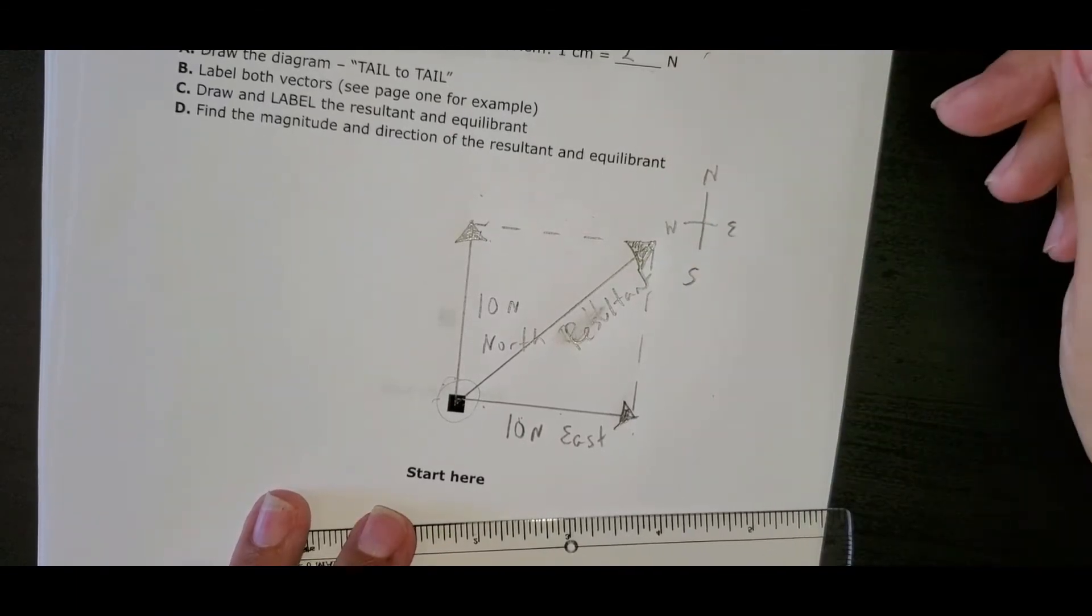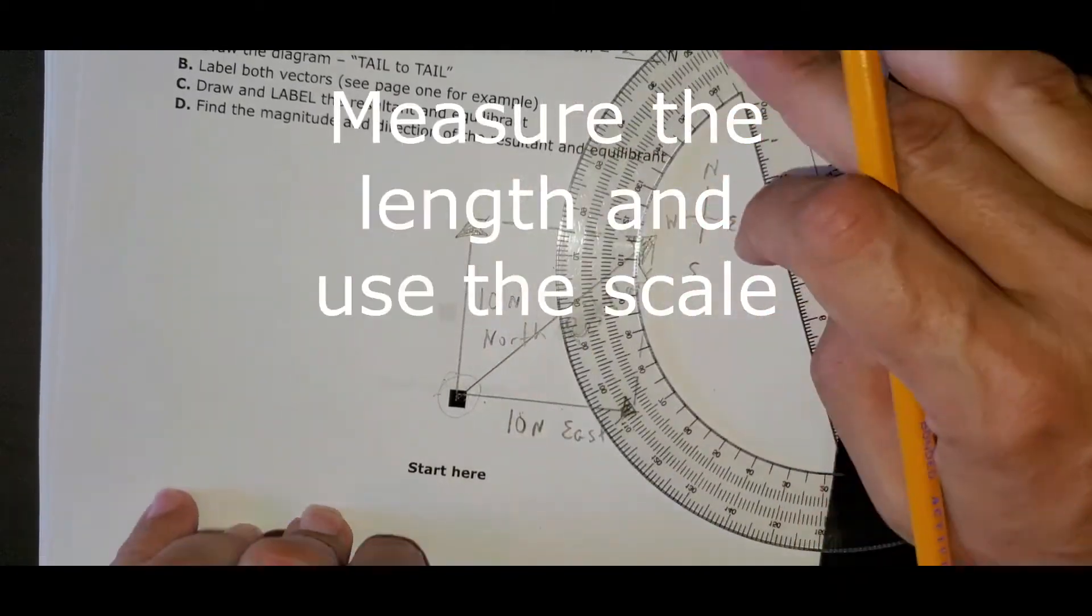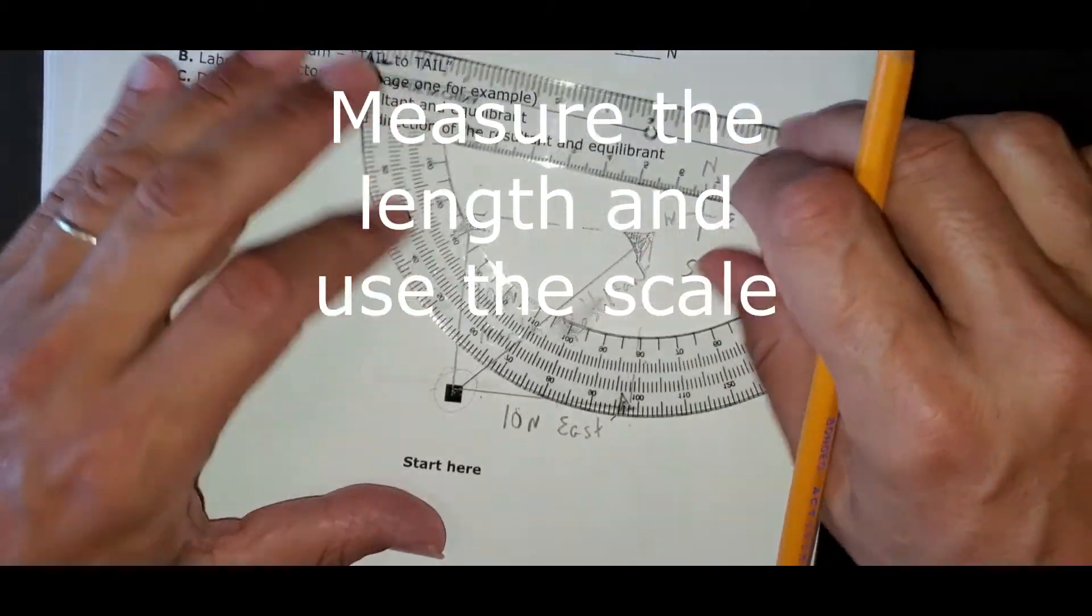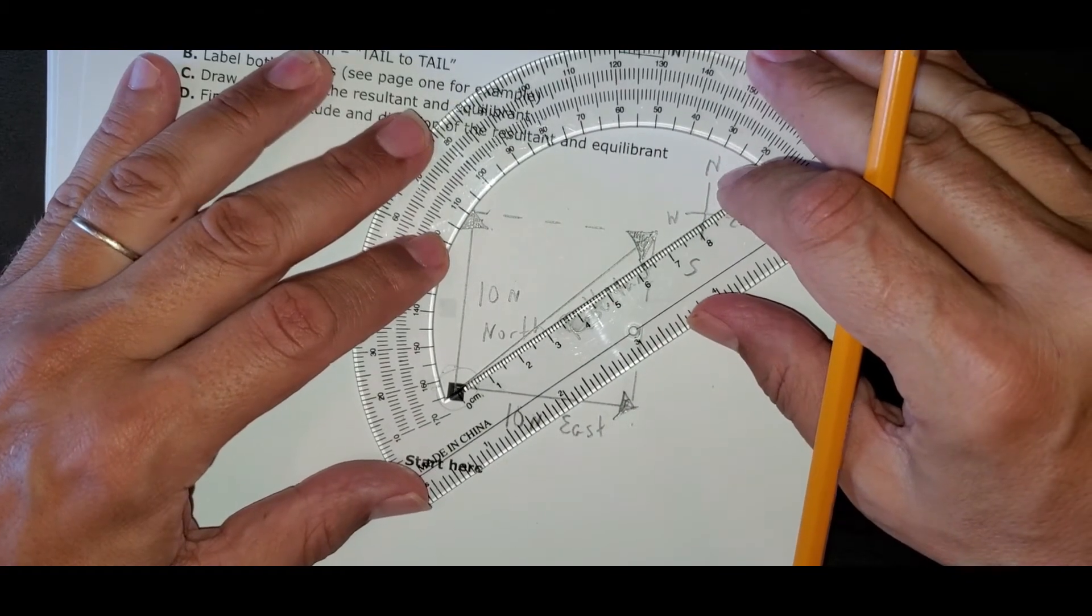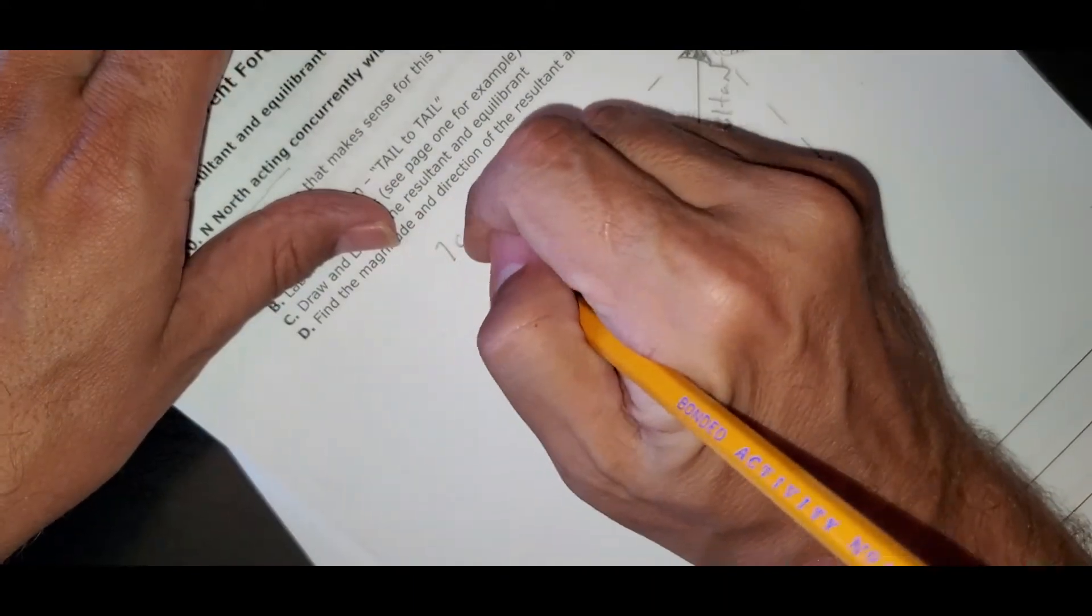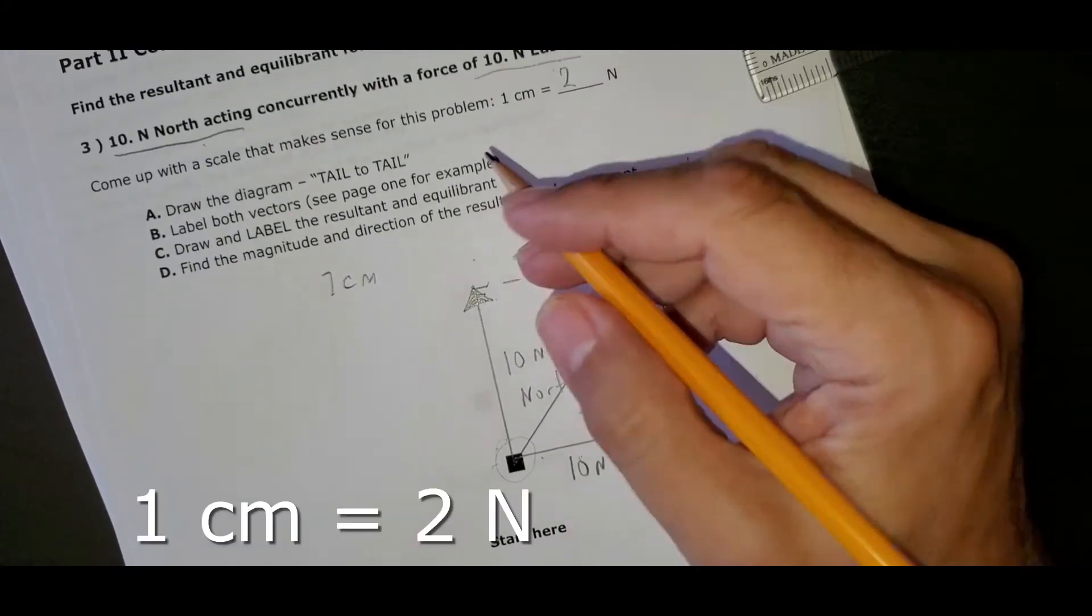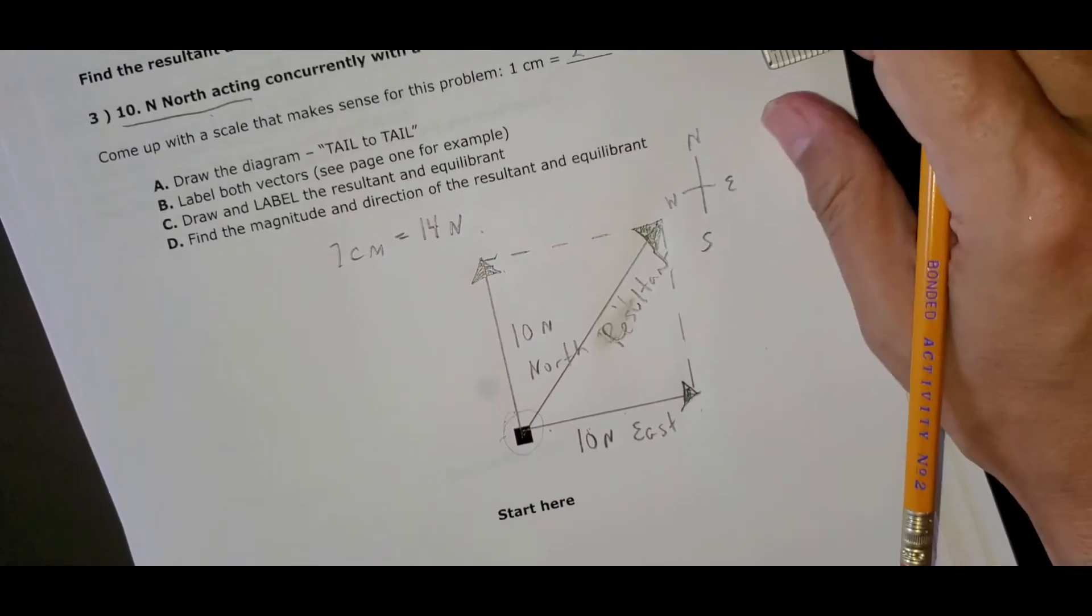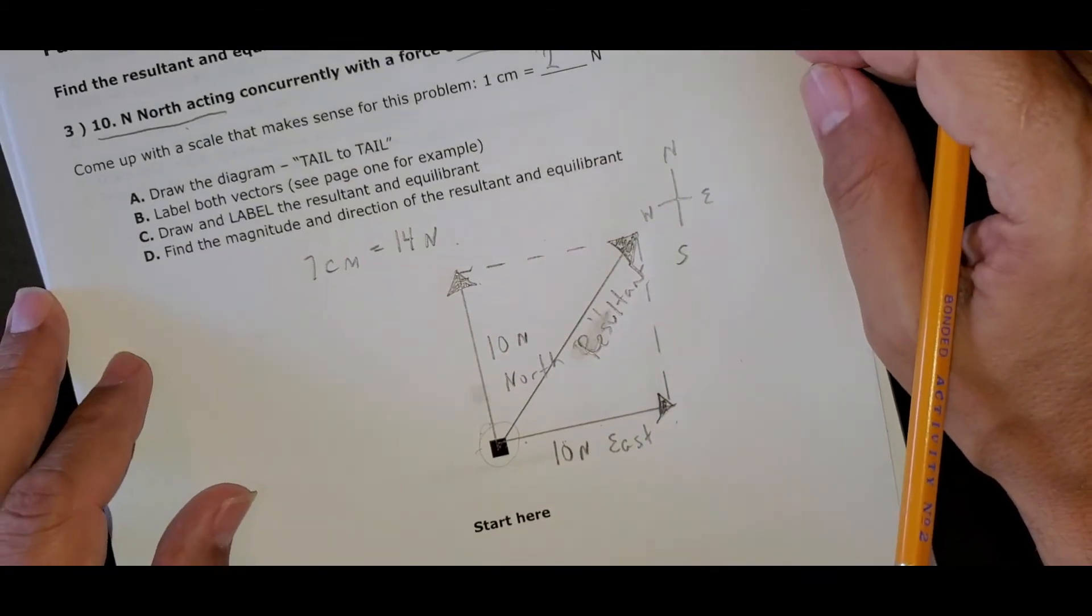Now, what is the magnitude and the direction of the resultant? So if one centimeter equals two newtons, all I have to do is measure the length and I will know the magnitude. Start right from the middle of the box and we go to seven. Seven centimeters, but be really careful. If every centimeter equals two newtons, that means 14 newtons. The resultant is 14 newtons. So that's the magnitude of the resultant.